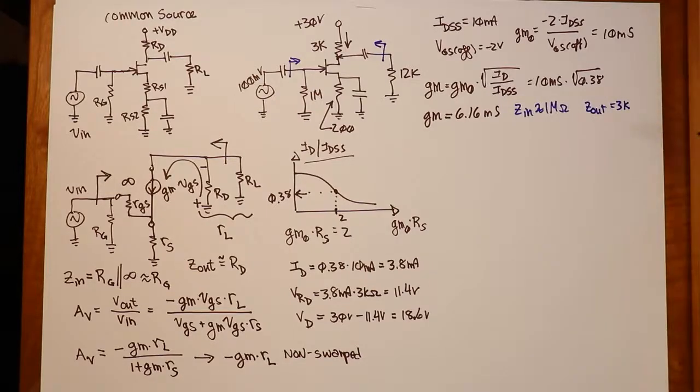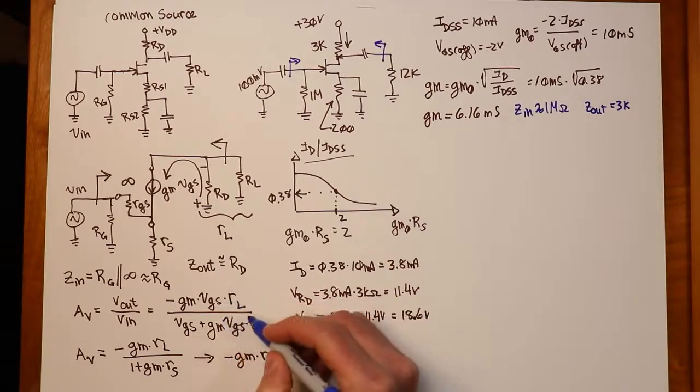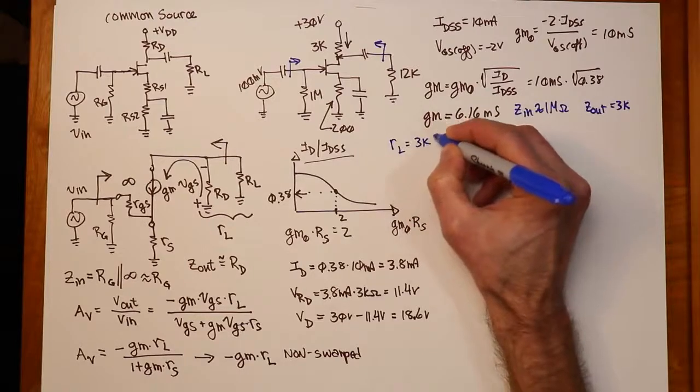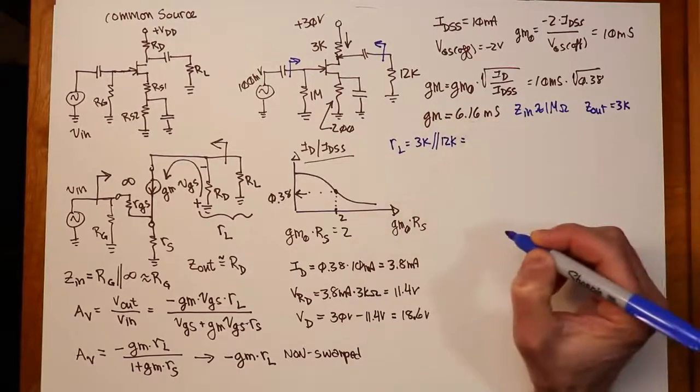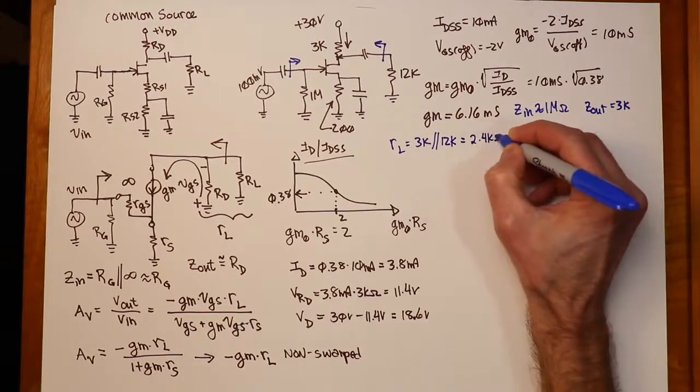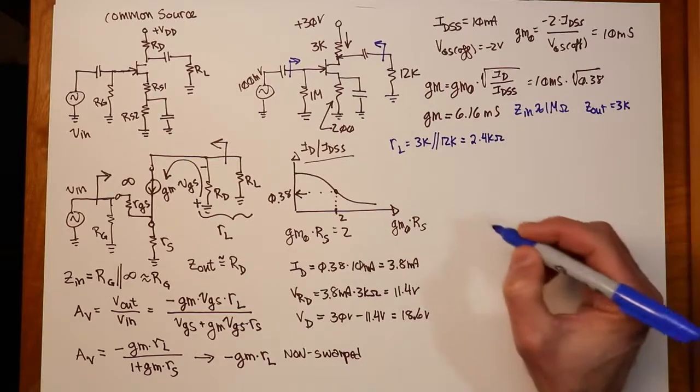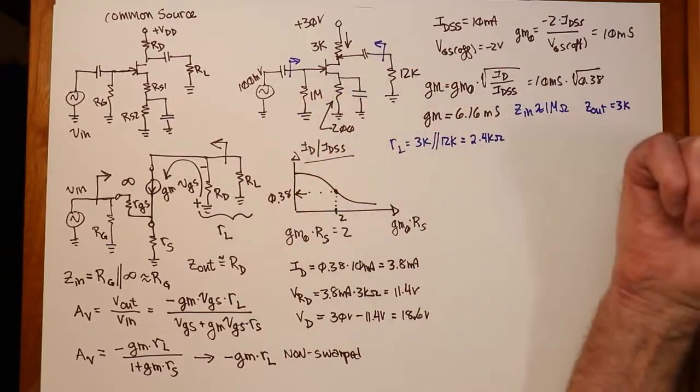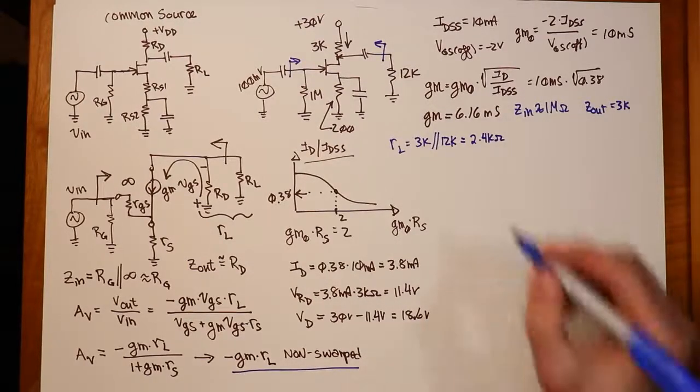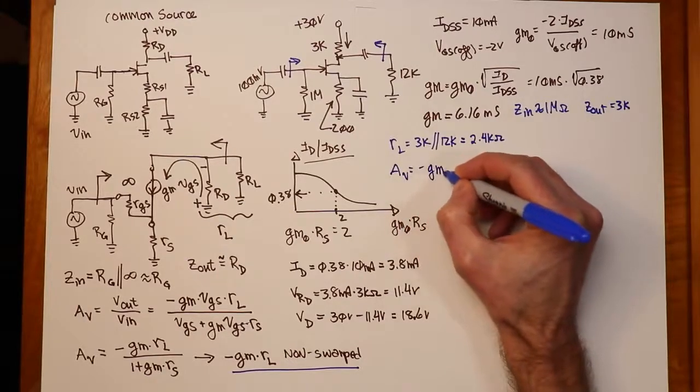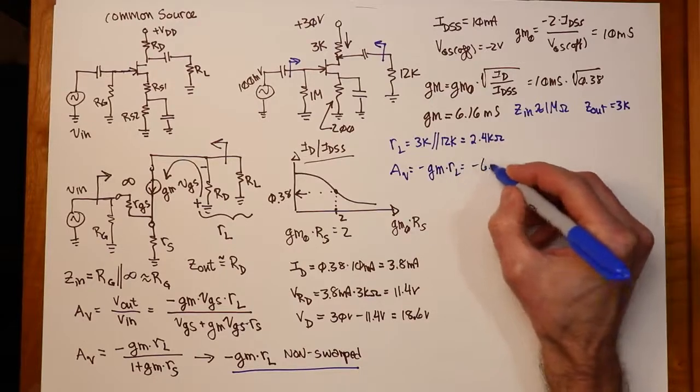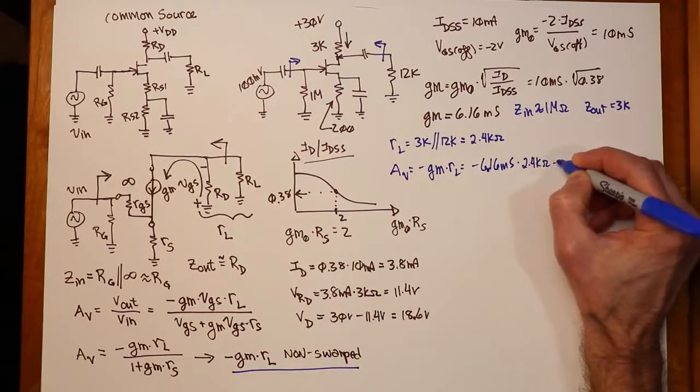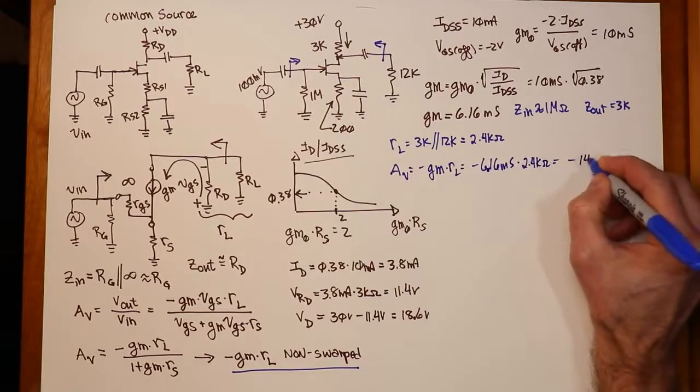Two thirds there. Now, got to find the gain. We could find the gain loaded, the loaded gain using the little RL, which in this case, little RL is 3K in parallel with 12K. And that works out to 2.4K. So if I find the loaded gain, this is not swamped. These caps short. So the 200 ohm, it's out of there. It's gone. So our gain falls back to this. Just the negative GM times RL. So that's a negative 6.16 times the 2.4K. So we get the negative. Multiply this out. We get 14.8. Now remember, the minus sign just tells you you have a phase inversion.